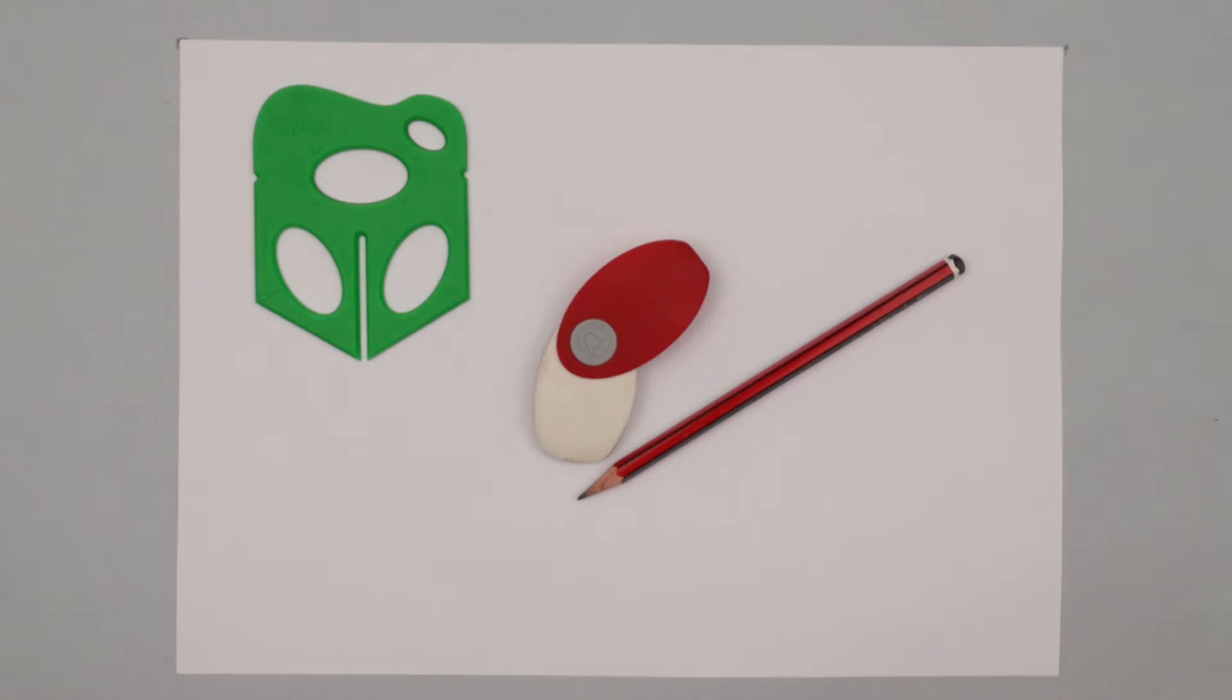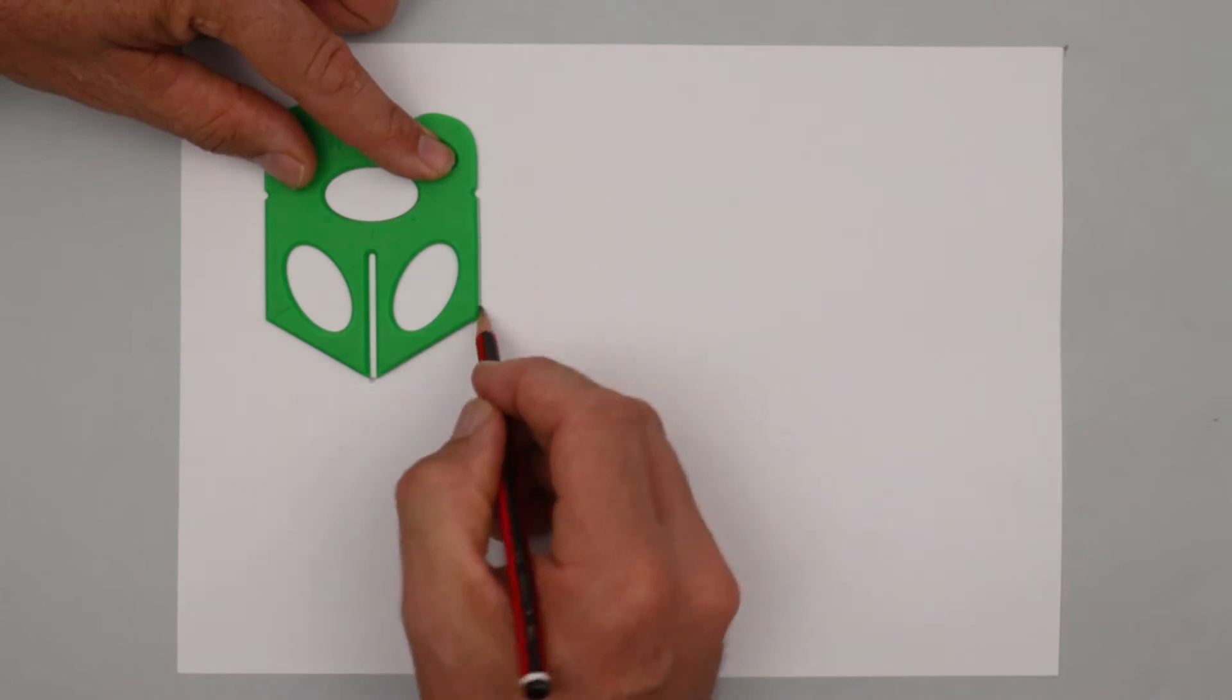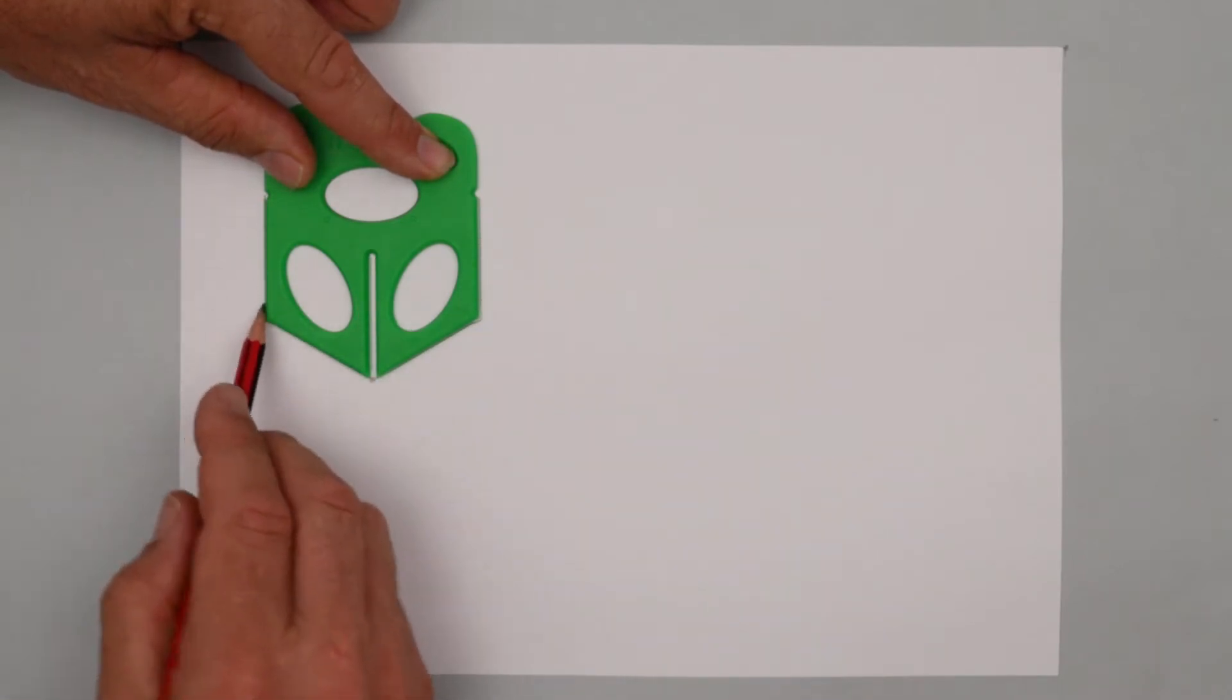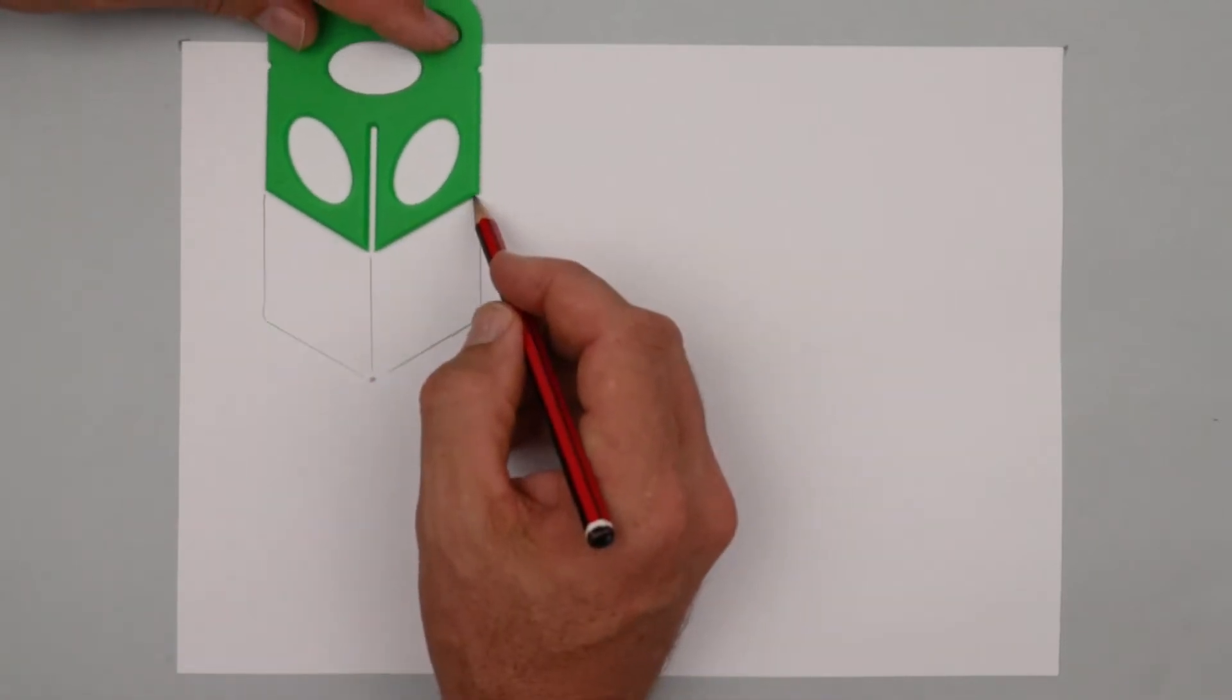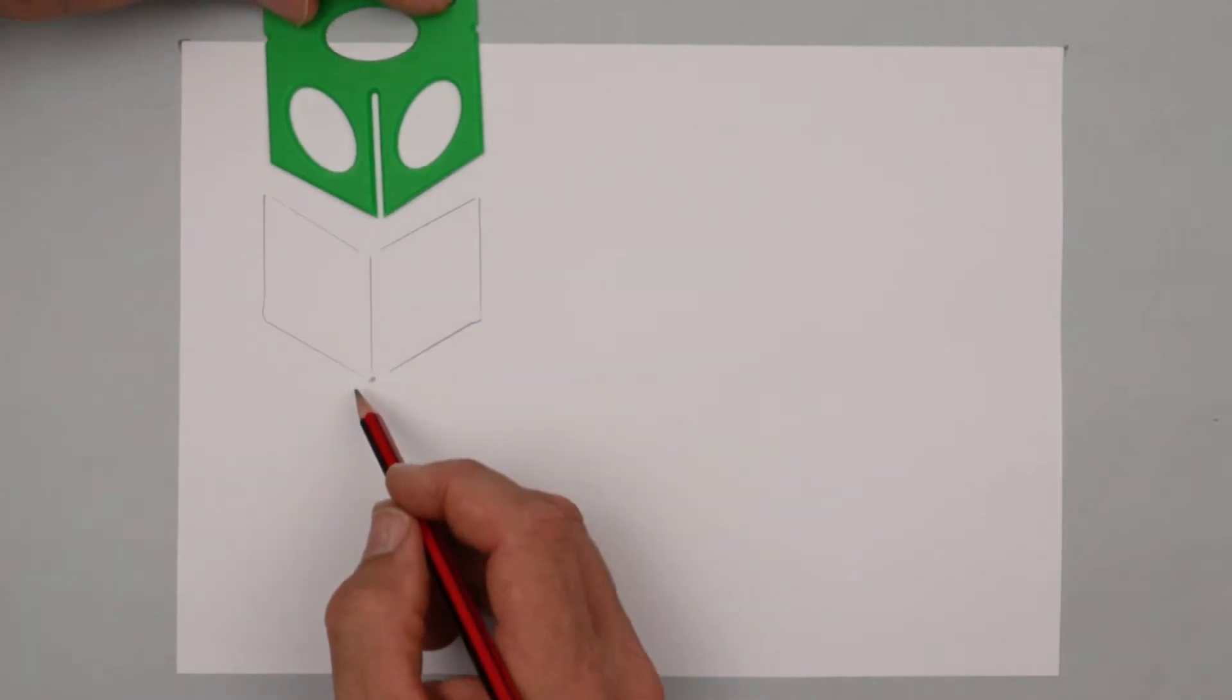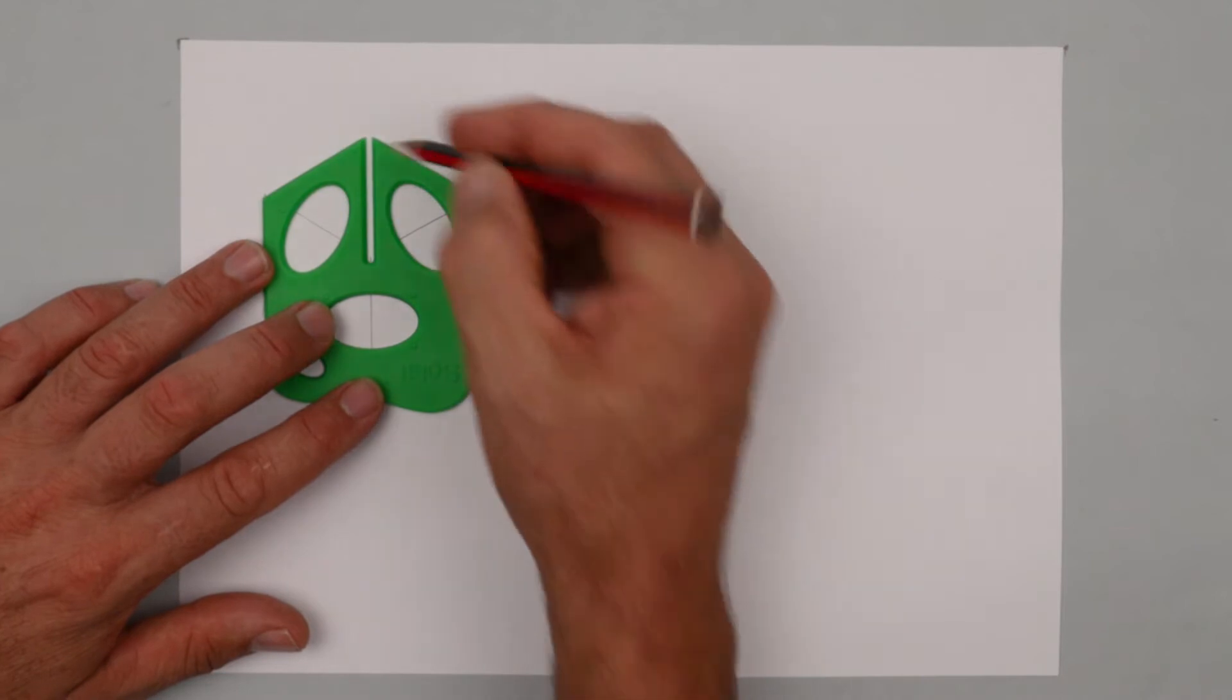To start off with you'll need a pencil and eraser and splat. Let's start off with a cube. Remember there's three steps for drawing a cube. Trace around the bottom, step two, and step three, completing the far edges.